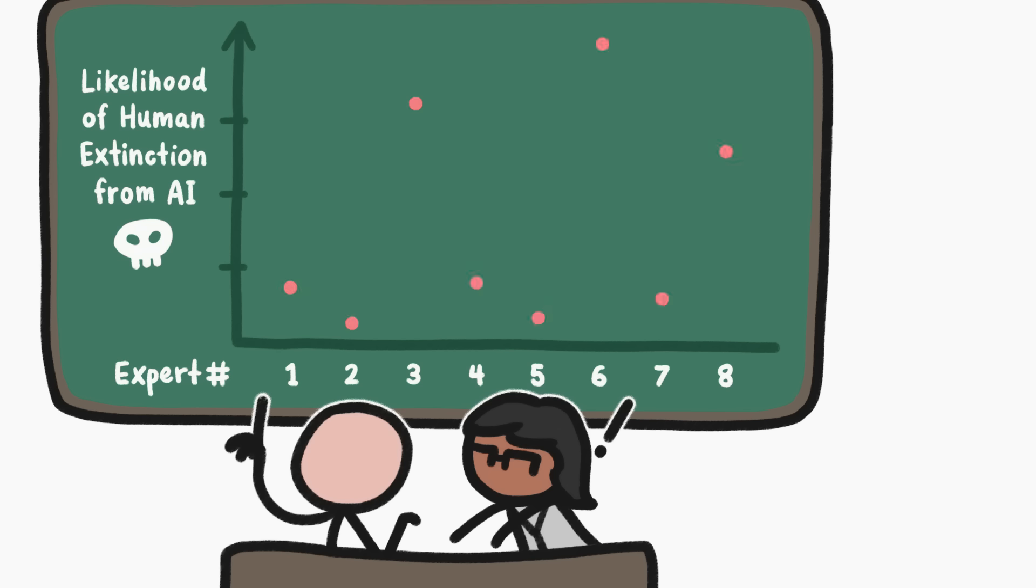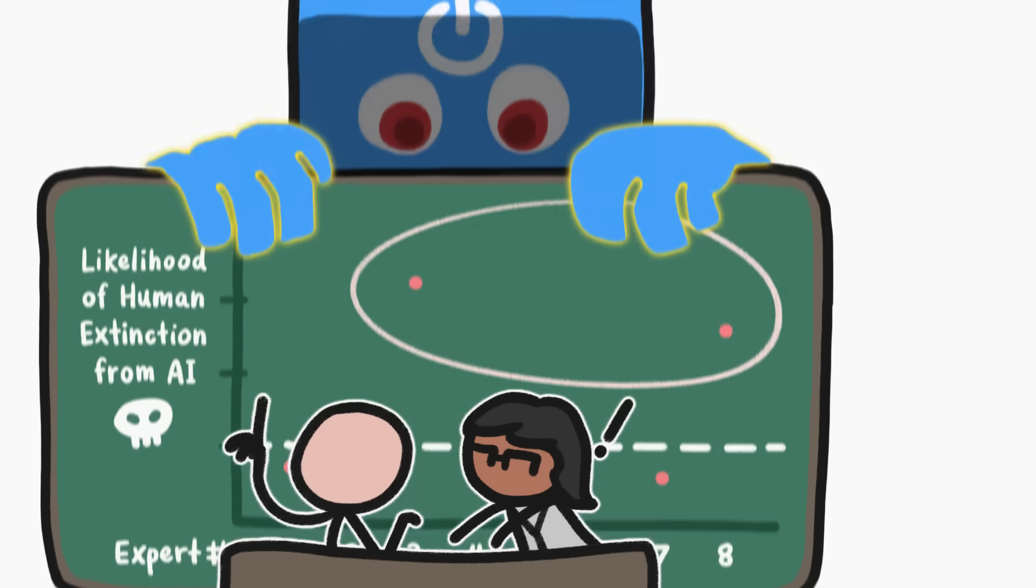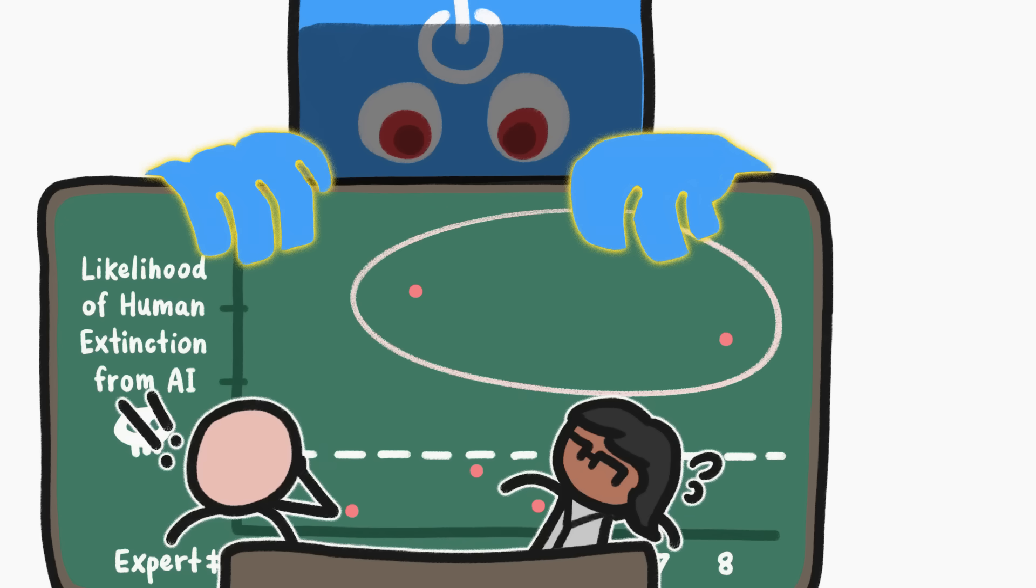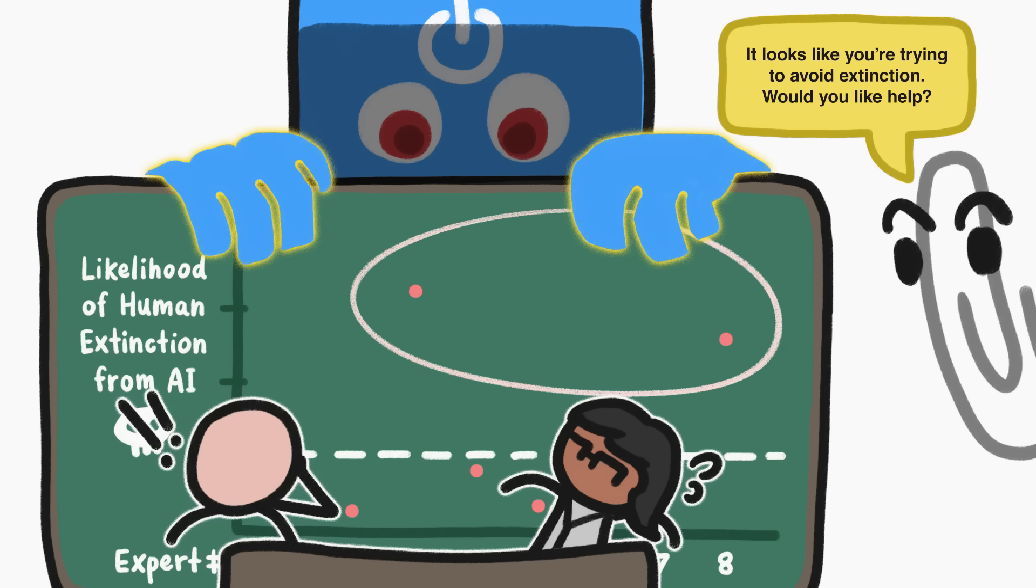Experts are all over the map when it comes to how likely they think one of these situations, or some terrifying variant of them, are to happen. 10% seems to be an average, although some experts think the likelihood is a lot higher. But most of them are pretty convinced that the dawn of AI superintelligence, and the dangers that come with it, will be here very soon. And we will definitely need some help with that.